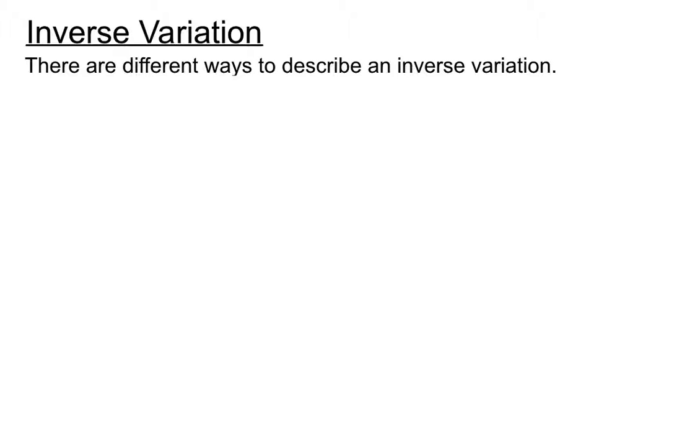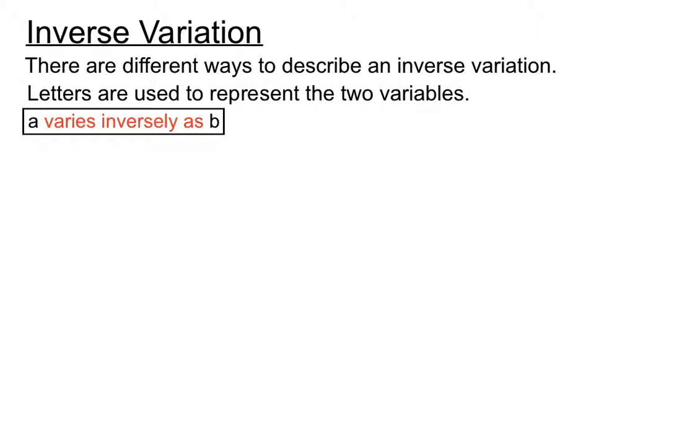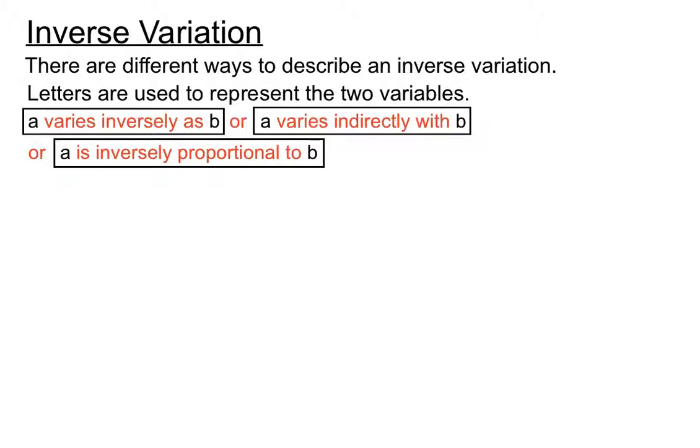There are different ways to describe an inverse variation according to the language of the question. Letters are used to represent the two variables. We can say A varies inversely as B, A varies indirectly with B, or A is inversely proportional to B. That's three different ways of saying we have an inverse variation between two items.